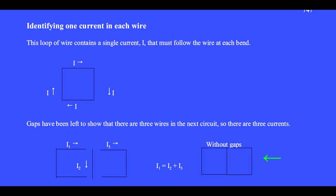This circuit has three wires. The three wires are more readily apparent if we put little gaps between them. The statement of the conservation of charge at this point is that the current flowing into the point, that's I1, equals the currents that flow out of the point, which are I2 plus I3.